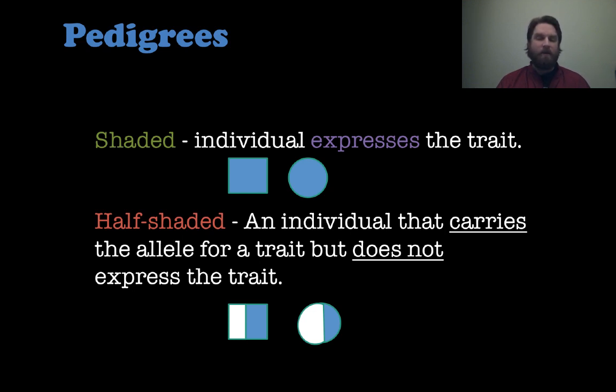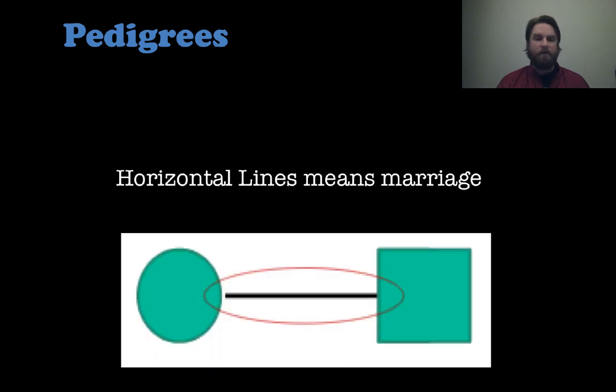So that's only in cases when you're looking at dominant versus recessive. When you have a circle and a square and a horizontal line, that means a marriage or a mating actually more accurately. So male and female mate have children. You see a solid line horizontal between the two individuals.